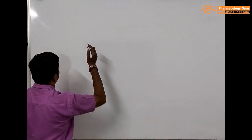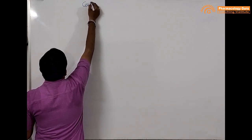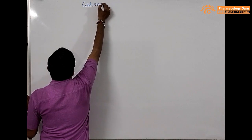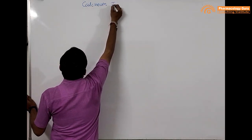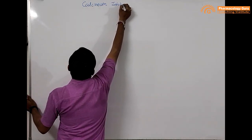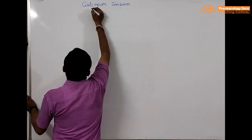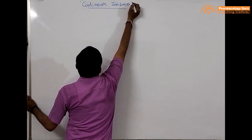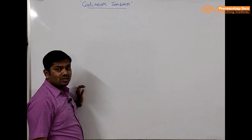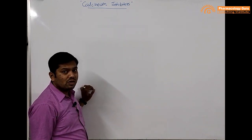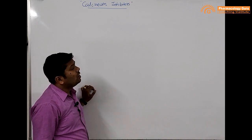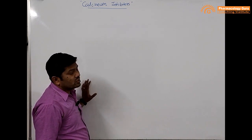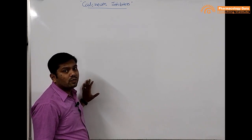Good morning friends. Today we will see the mechanism of action of calcineurin inhibitors. Calcineurin inhibitors are the main therapy for immunosuppression — they are the immunosuppressive agents used in organ transplant or in autoimmune diseases, and this is the main first-line therapy for that.